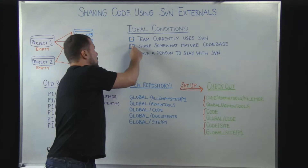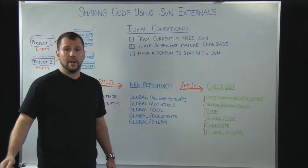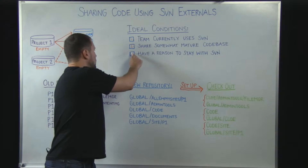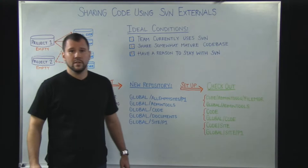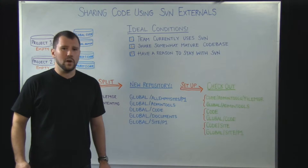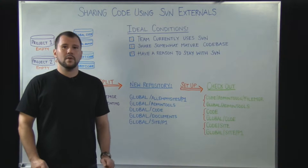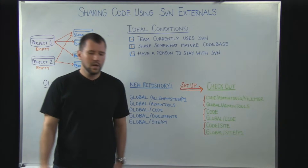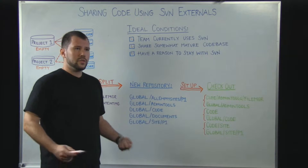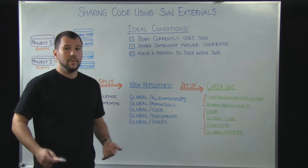You have the need to share a somewhat mature code base across multiple projects in your organization, or for a particular client that is large enough to be spanning multiple projects. And third, you have a very good reason to stay with Subversion — whatever that may be. It could range from IT pushback, to not wanting to install another system, to simply preferring Subversion over other systems. So if you meet that criteria, then using SVN externals as a solution for sharing code across multiple projects may be a good one for you.